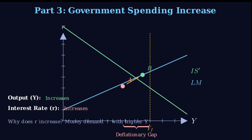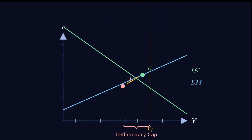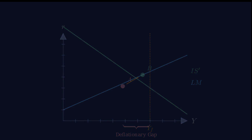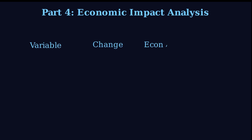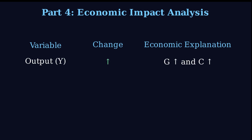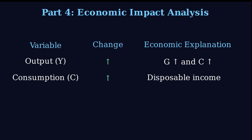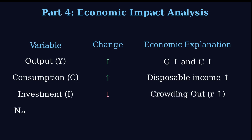Now that we know Y and R have changed, let's look at the breakdown. Output equals consumption plus investment plus government spending — where did all the extra output go? Let's start with the things that increased. Total output Y clearly increased; the policy worked in that sense, it expanded the economy and moved us closer to full employment. Government spending G also increased — that was the action that started this whole chain reaction. Consumption C also increases: the rise in output Y means higher income for everybody, and since taxes didn't change, disposable income is up, so people feel a bit richer and spend more.